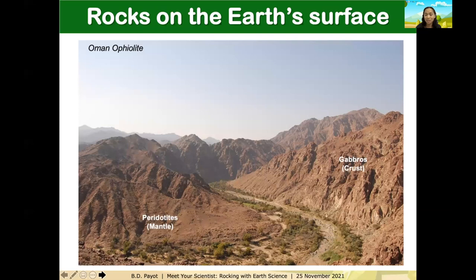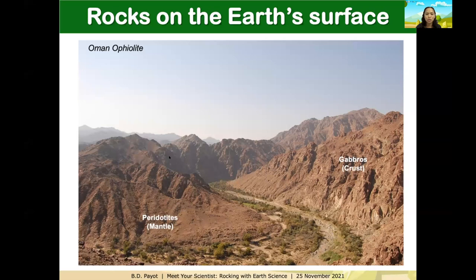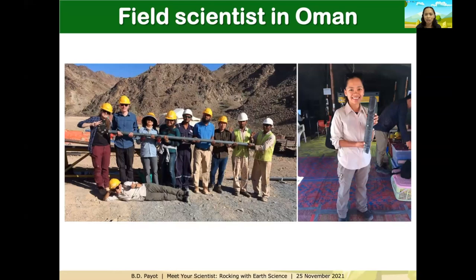This cartoon shows how ophiolites are actually formed — during collision of plates and tectonic movement, oceanic sequences comprising crust and mantle rocks can be exposed on land. For example, you're looking at photos of rocks from the Oman ophiolite: peridotites on the left, believed to be mantle rocks, and gabbros on the right, representative of the lower crust. I had the opportunity to participate as a field scientist in Oman in 2017 to study rocks from the Oman ophiolite.